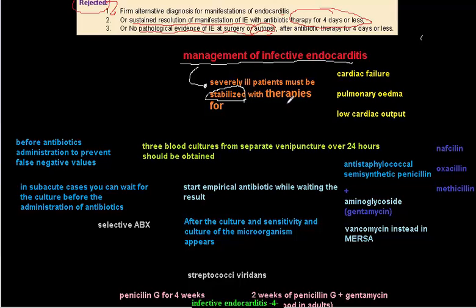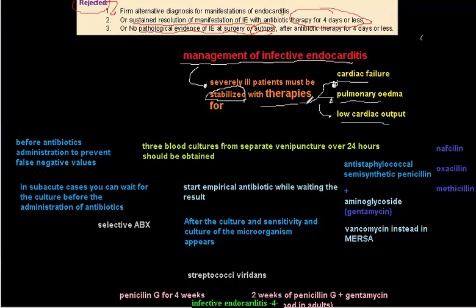To stabilize the patient, you address cardiac failure, pulmonary edema, and low cardiac output — because the most important problems of infective endocarditis are related to cardiac failure, low cardiac output, and pulmonary edema. You stabilize the patient with appropriate therapeutic drugs.